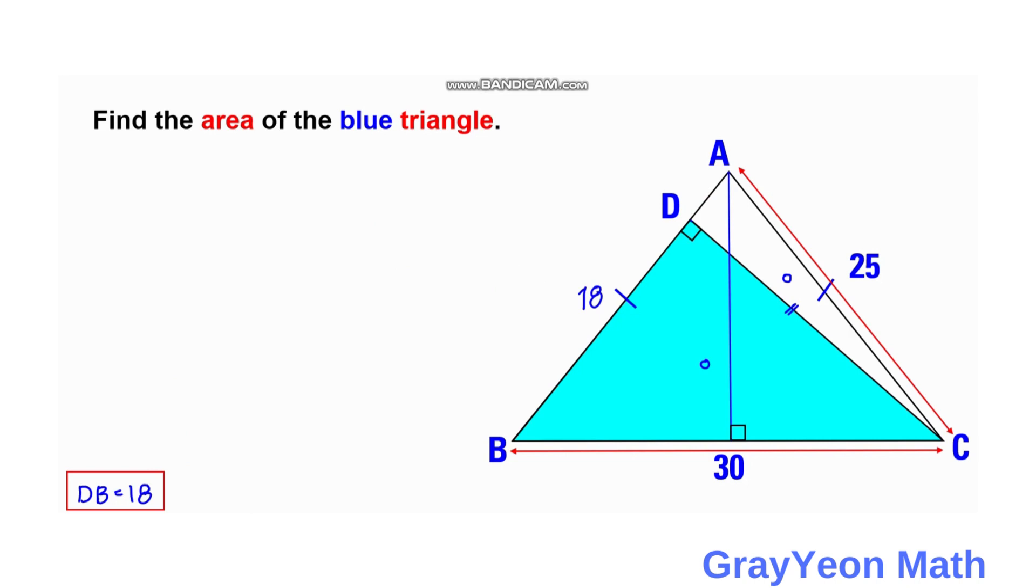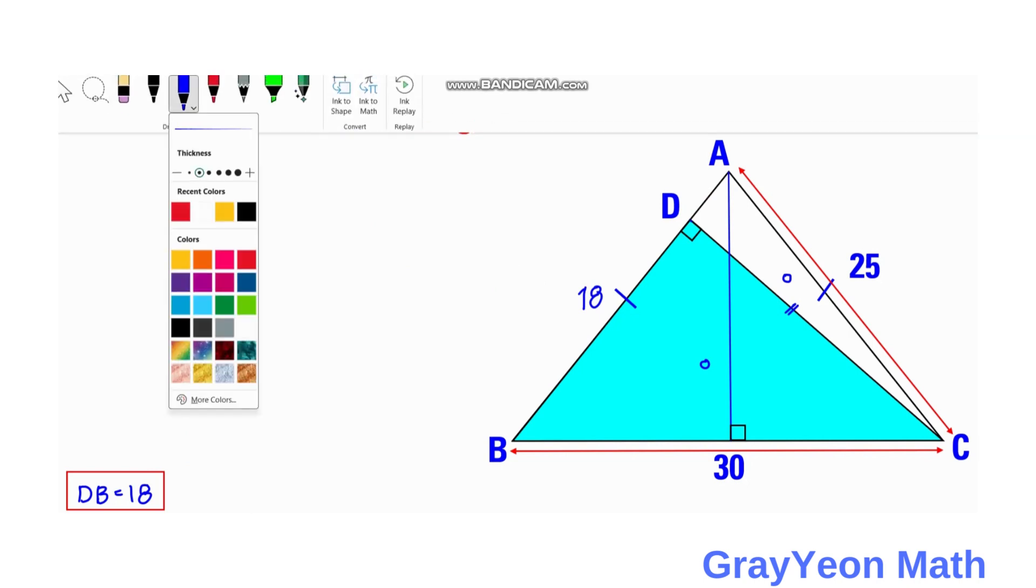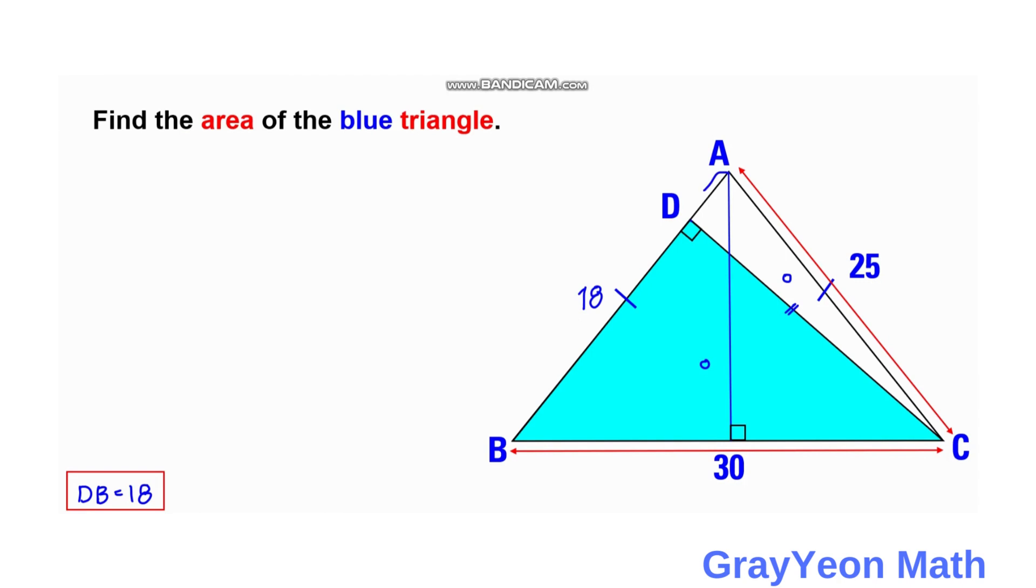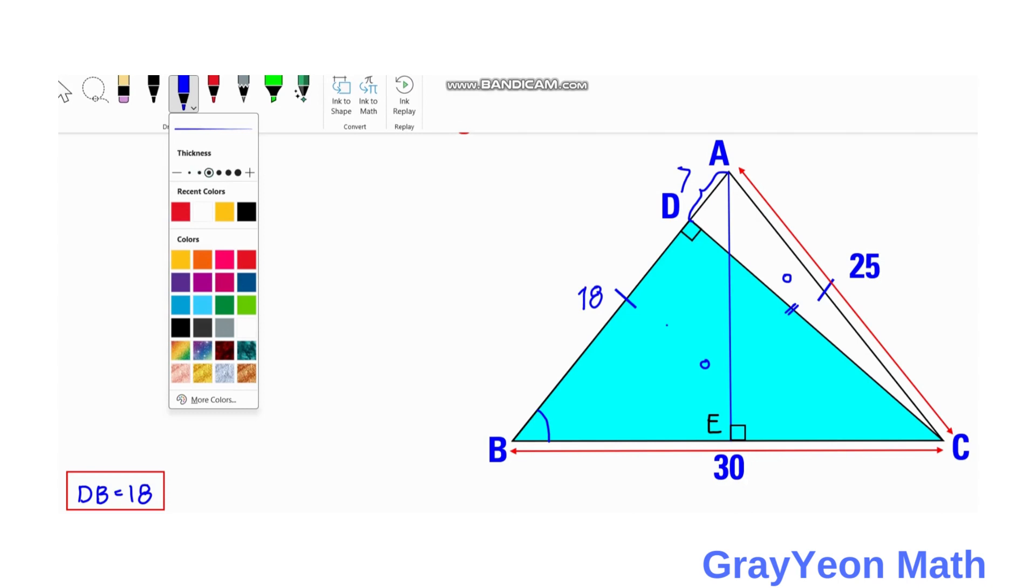So if DB is equal to 18, then this AD is actually 25 minus 18, and that will give you 7 units. We label a certain point, let's call this as E, this on the perpendicular point AE. Next is, I want you to focus on this triangle AEB.